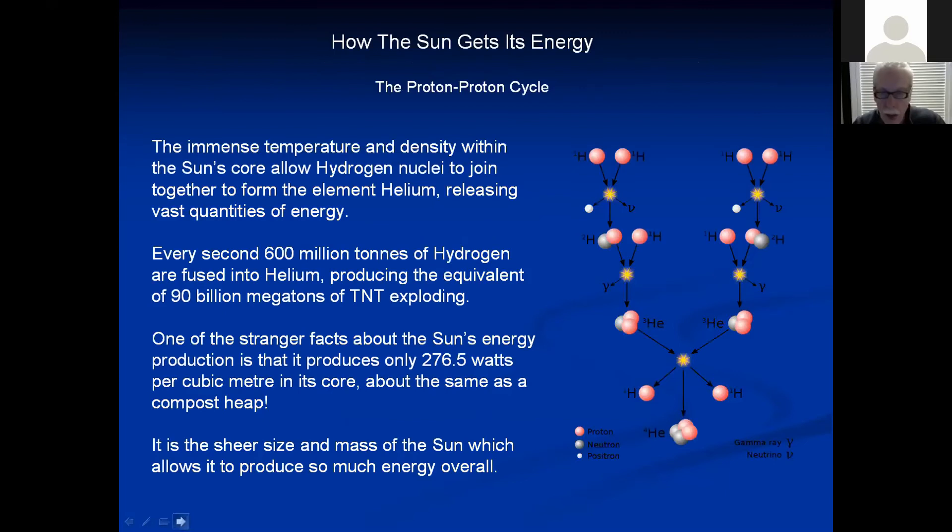Now, this is how it's done on the sun and the immense temperature and density of the sun's core allow hydrogen nuclei to join together to form the element helium, releasing huge quantities of energy. So I won't describe this in any great detail, but essentially hydrogen nuclei come together, do various things, add more hydrogen nuclei and eventually it forms a helium nucleus. Now, the four hydrogen nuclei on their own have a greater mass than this helium nucleus. The helium nucleus is a more compact arrangement of matter and has a bit less mass for that reason. And that is what actually produces all the energy. And indeed, 600 million tons of hydrogen are fused into helium, producing the equivalent of 90 billion megatons of TNT exploding continually.